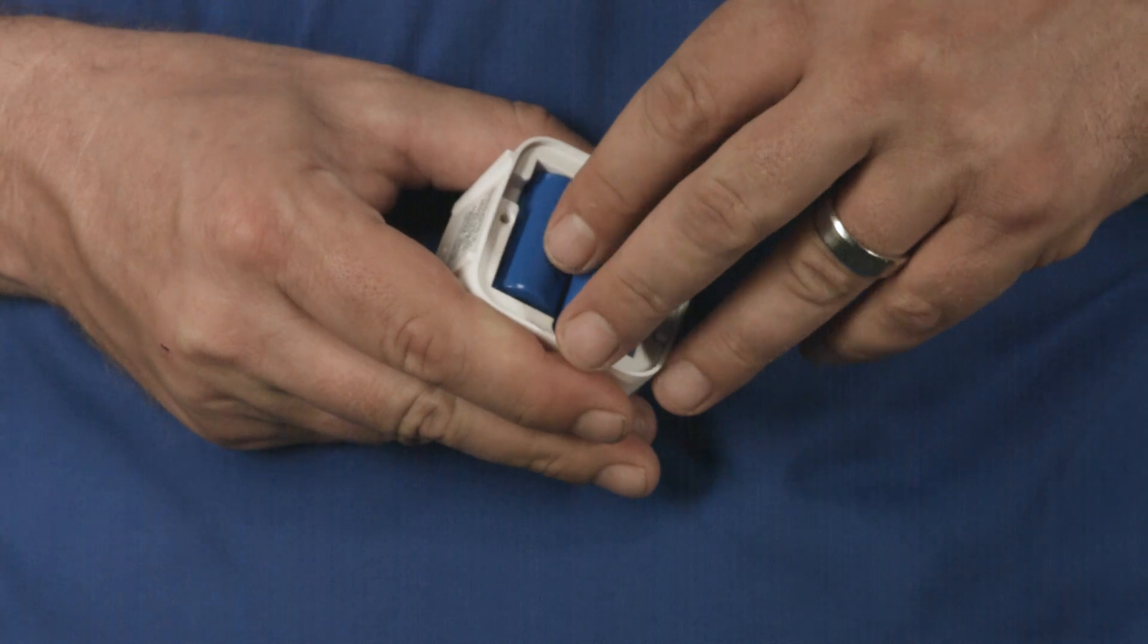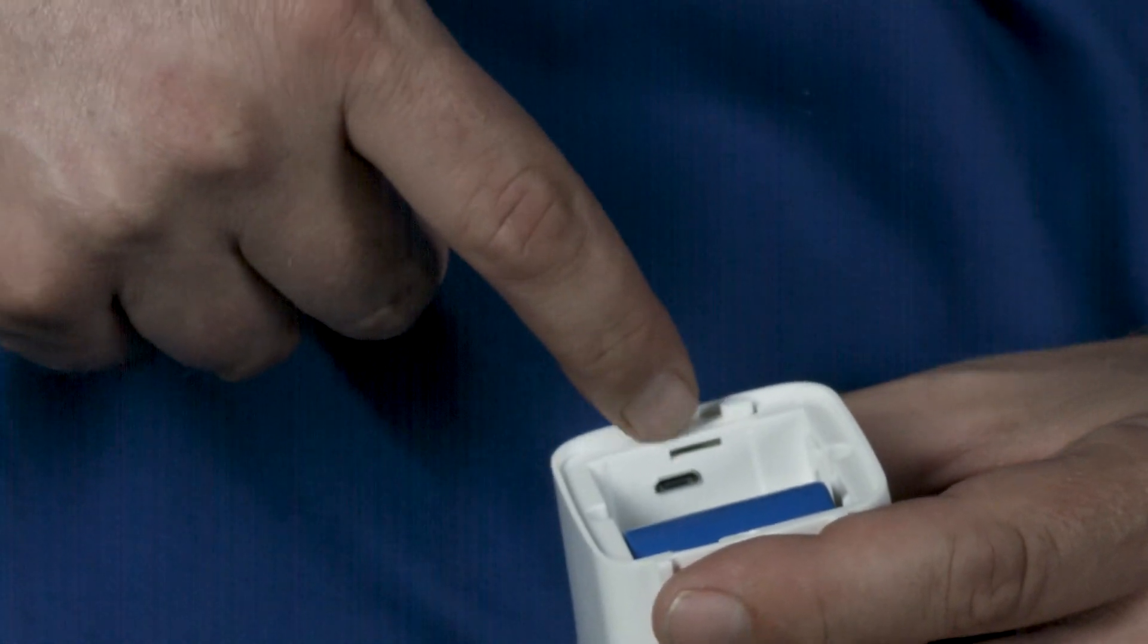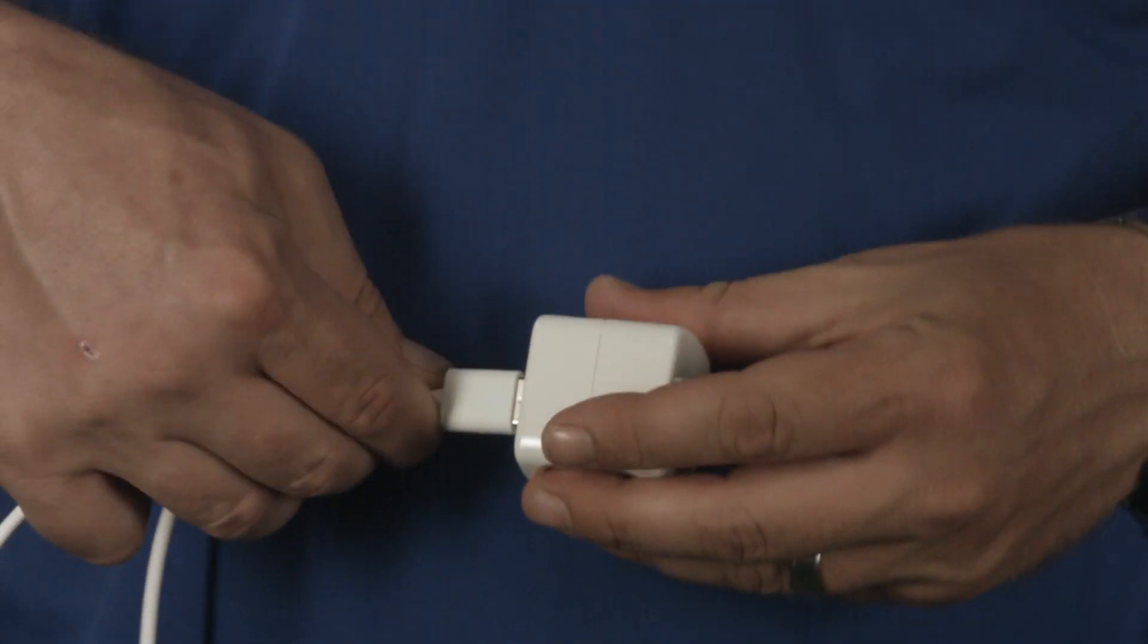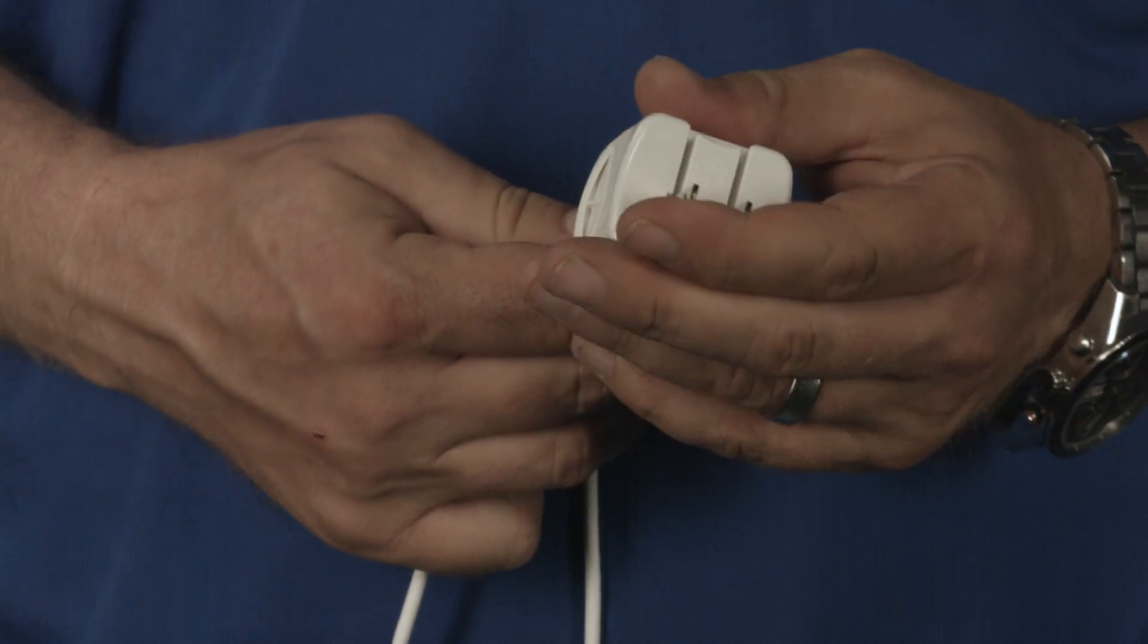For USB power, remove the batteries and locate the USB port inside the battery compartment. You will need to purchase a micro USB cable and an AC adapter with at least a 5 volt, 500 milliamp rating.